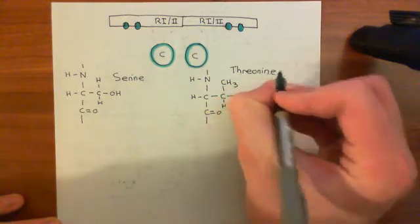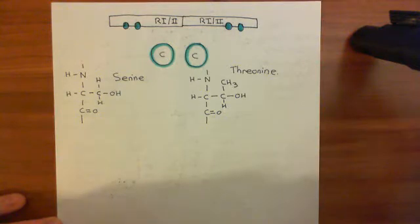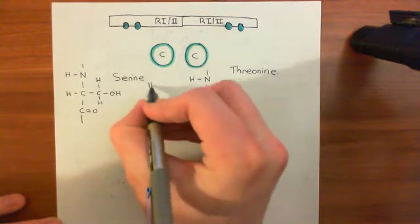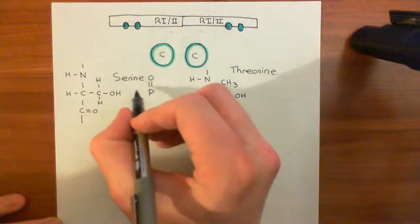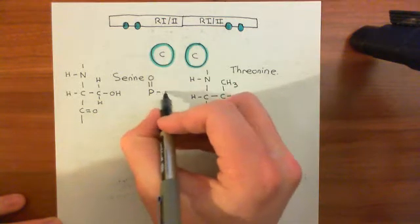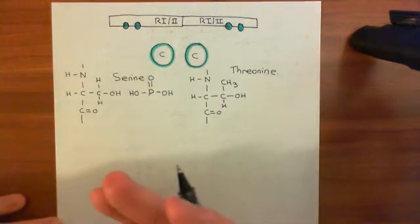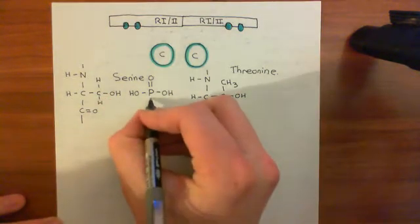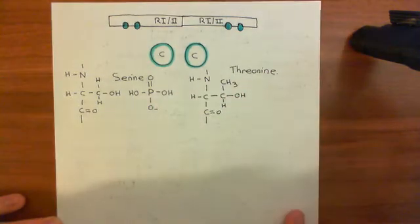What can happen to these serine and threonine residues is that the alcohol group in both can be phosphorylated. I'll show this as though we're binding an inorganic phosphate group on. But in reality, when catalytic subunits attach phosphate groups, they do not take inorganic phosphate from the cytoplasm — instead they take ATP molecules, cut the gamma phosphate off, and attach it onto these alcohol groups.